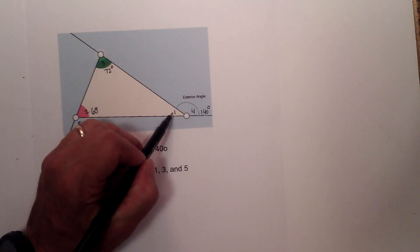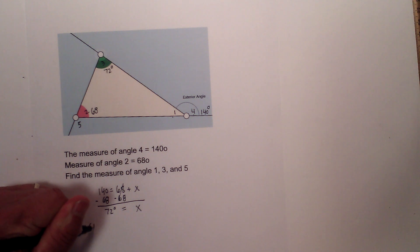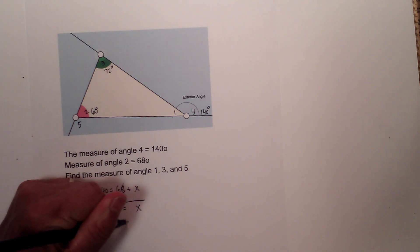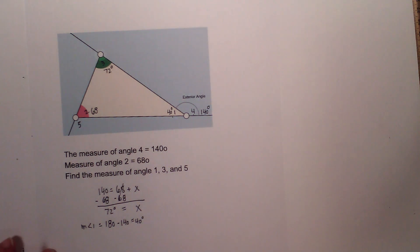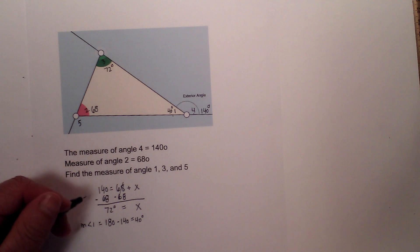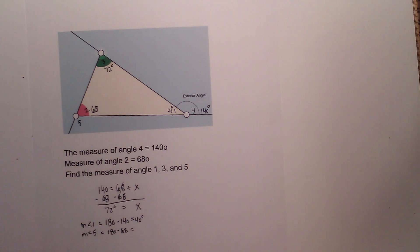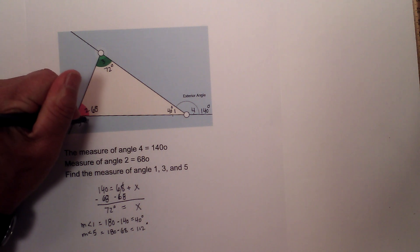Now let's find angle 1. Remember, these two angles are supplementary. So the measure of angle 1 would be equal to 180 minus 140, which is... 180 minus 68, which is 112 degrees.